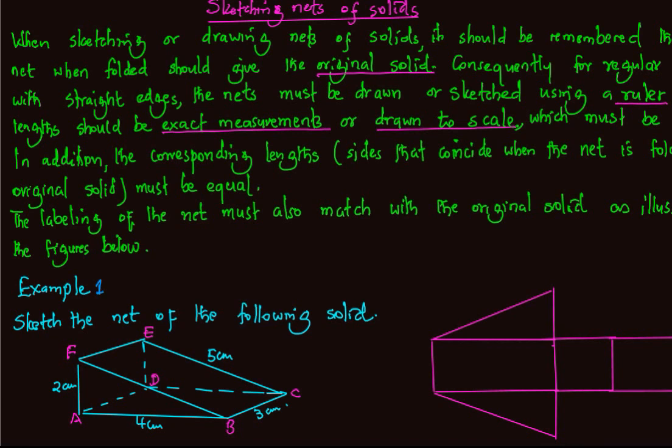we have a solid and this solid is labelled ABCDEF. When the solid is opened up along its edges, we get the figure alongside the solid and that is its net.